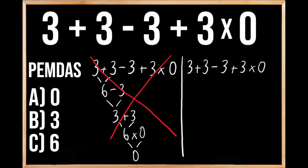The P in PEMDAS stands for parentheses, and the E stands for exponents. We don't have either one of those, so we're going to move on to the priority of multiplying. We do have some multiplication here, so we're going to start by solving the multiplication part of this problem. We're going to multiply 3 times 0, which gives us 0, and then bring down the rest of the problem: 3 plus 3 minus 3.